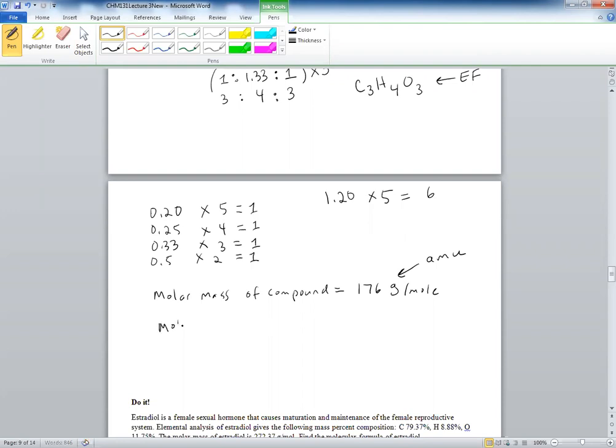So the molar mass of the empirical formula, which is C3H4O3, you would calculate this just the same way we did. Three carbons, four hydrogens, and three oxygens would come out to be 87.06.